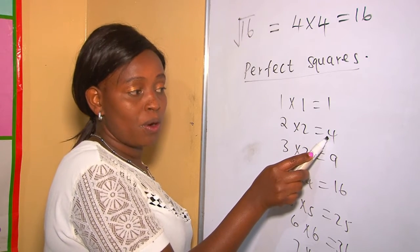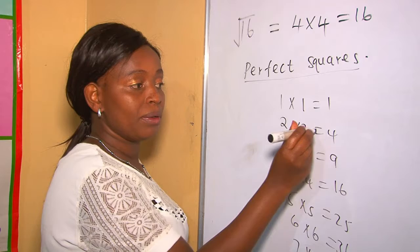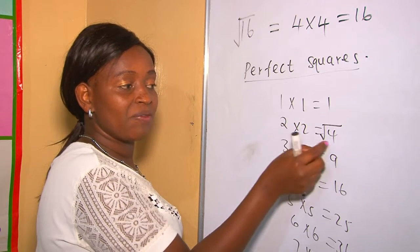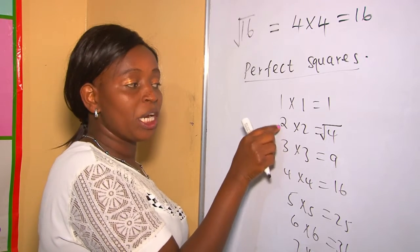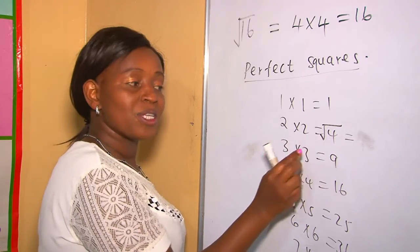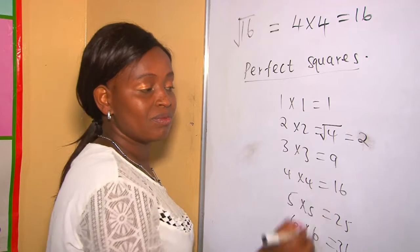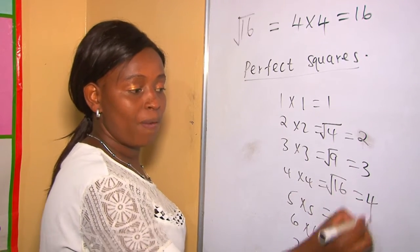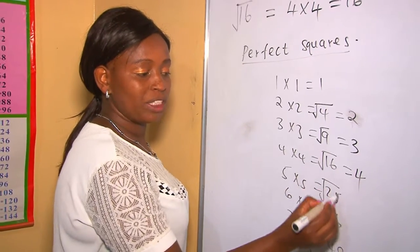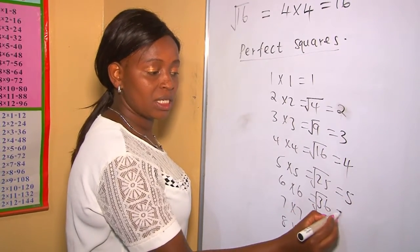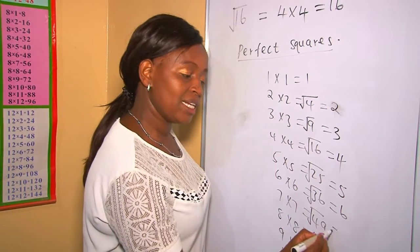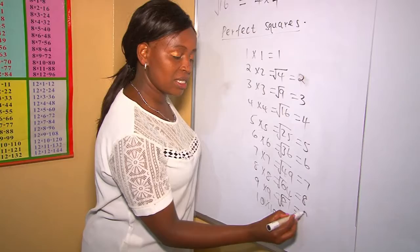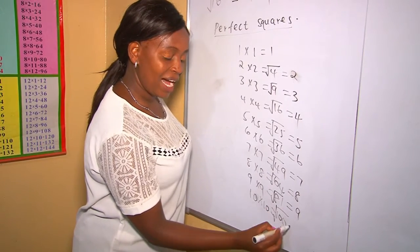So what is the square root of 4? It is a value that when multiplied by itself gives you 4, and that value is 2 — because 2 times 2 equals 4. Therefore: square root of 4 is 2, square root of 9 is 3, square root of 16 is 4, square root of 25 is 5, square root of 36 is 6, square root of 49 is 7, square root of 64 is 8, square root of 81 is 9, and square root of 100 is 10.